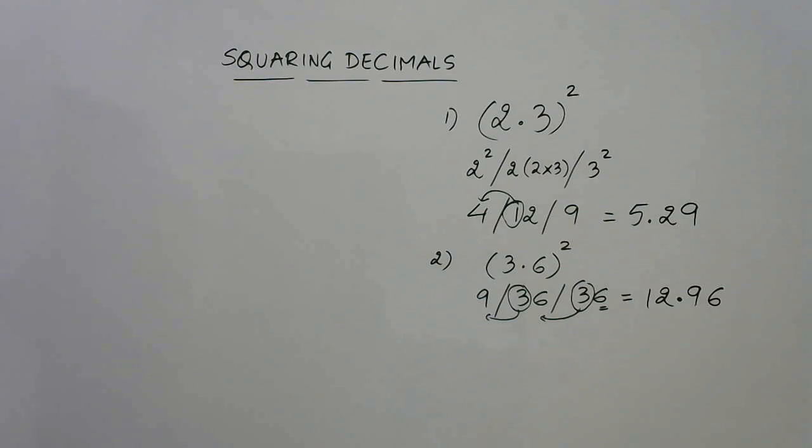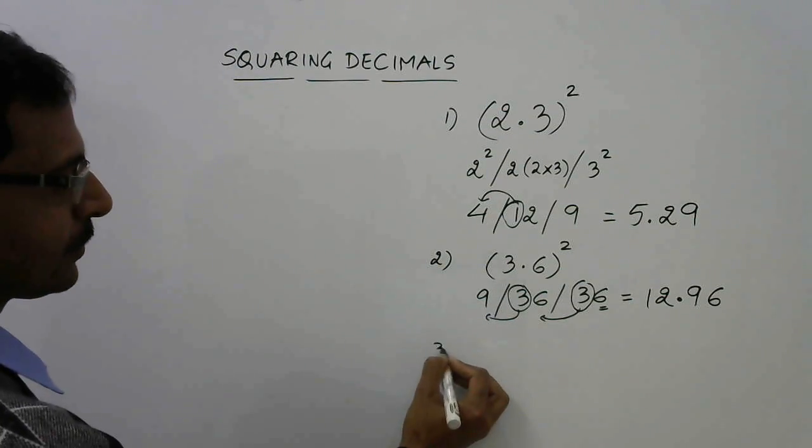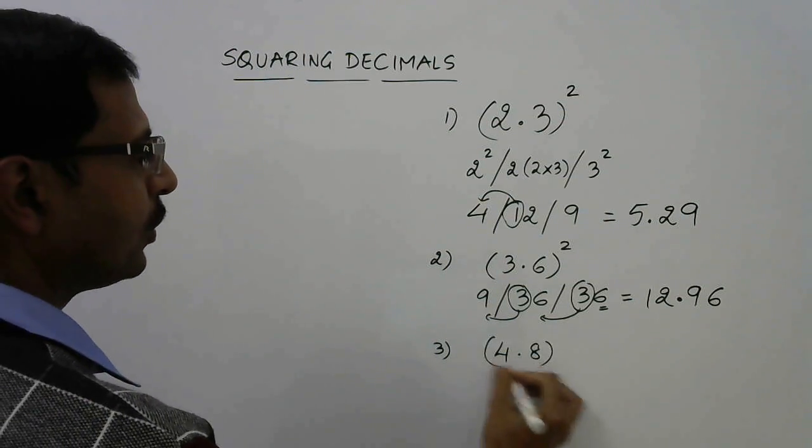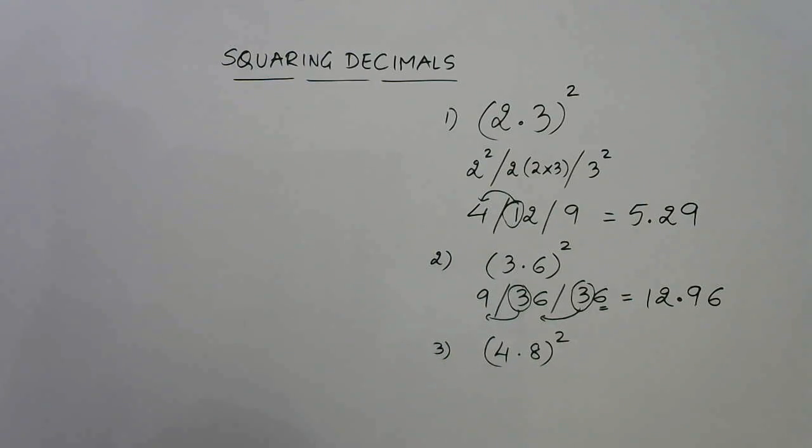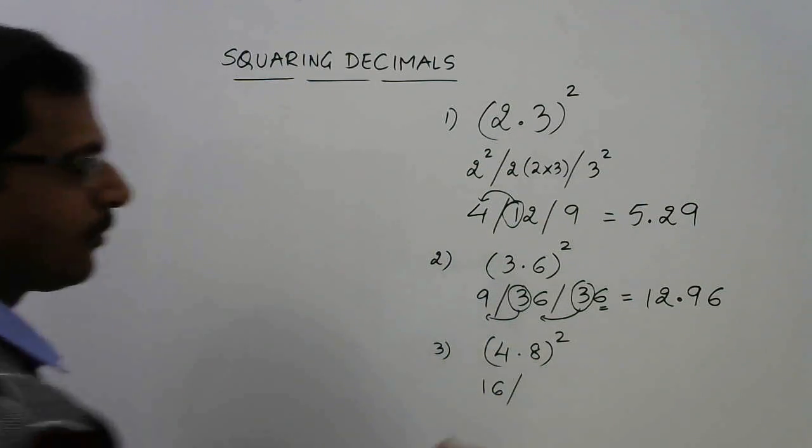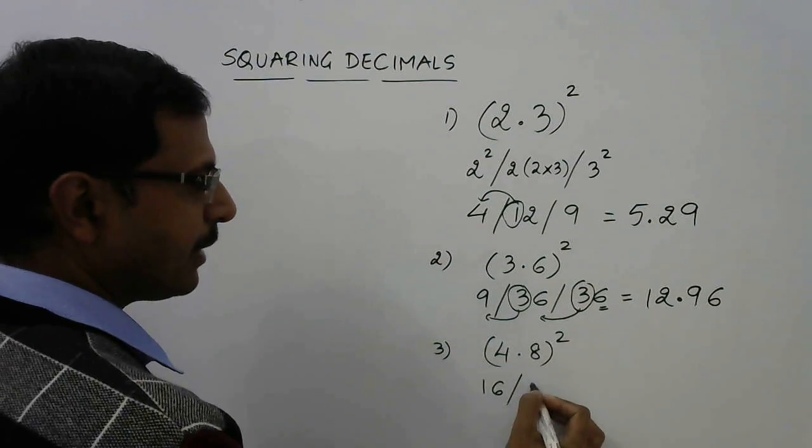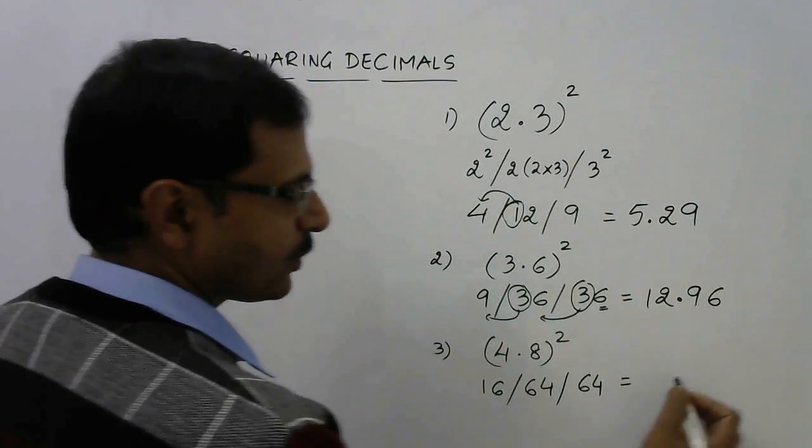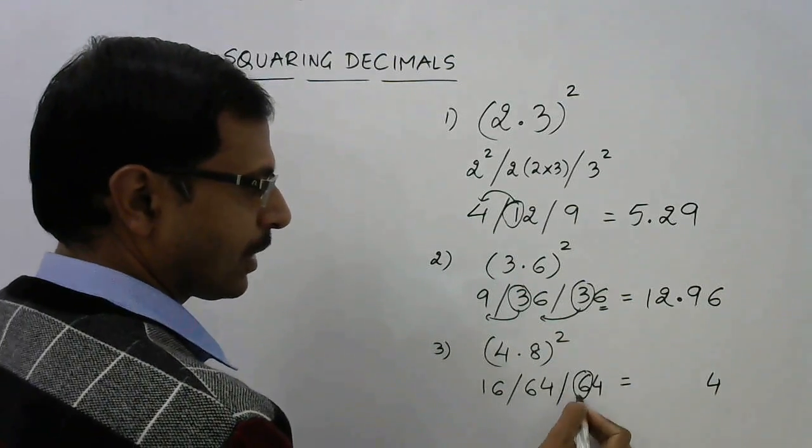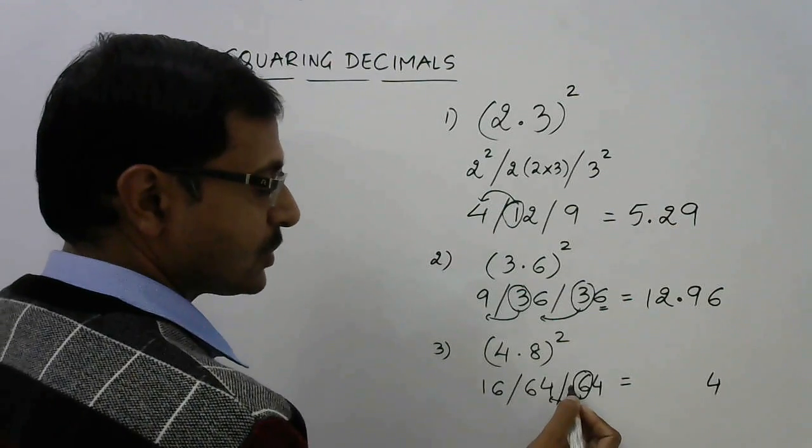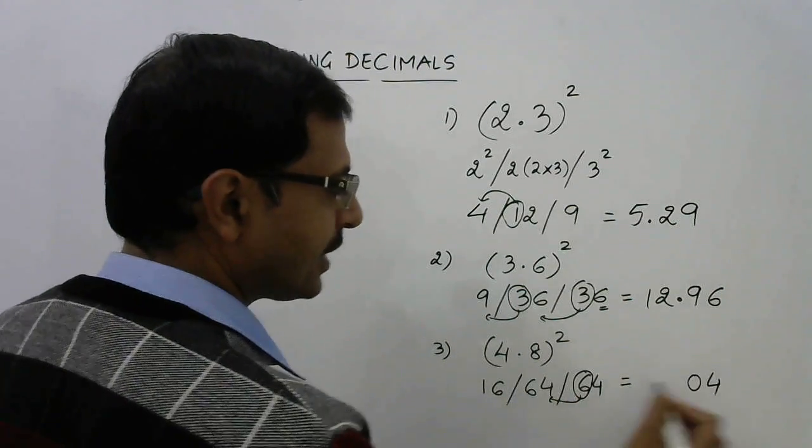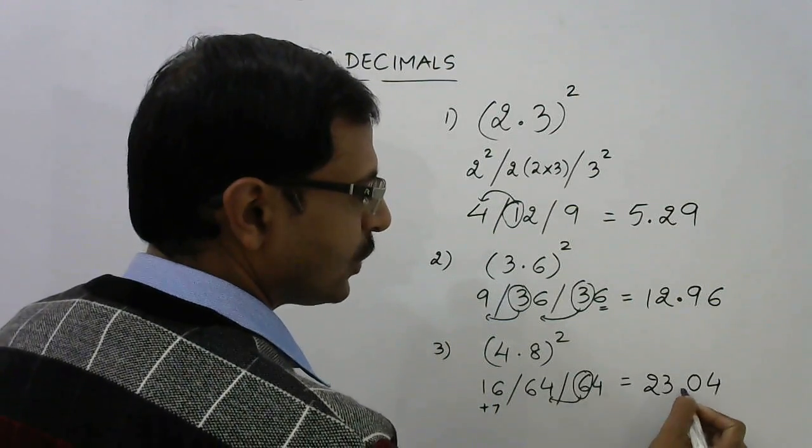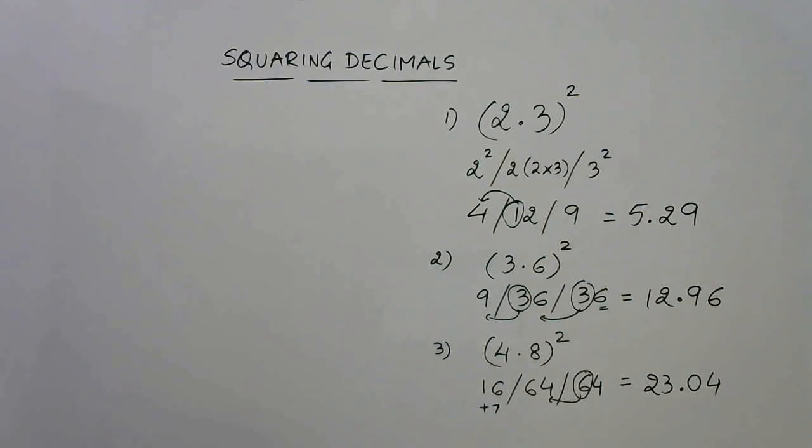Let's have the third example. Suppose we have (4.8)². Now see, 4² is 16, 8 into 4 is 32 and double that is 64, and 8² is 64. Start from the unit place: 4, 6 comes here, so 64 plus 6 is 70, so 0 comes here and 7 is carried forward. Now 16 plus 7 is 23, so you have 23.04 as the square of 4.8.